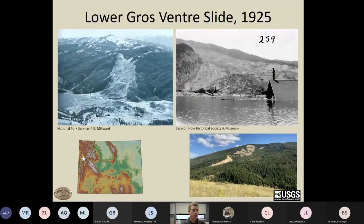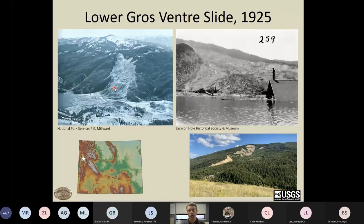I'd be remiss not to mention the Lower Grovant Slide — probably the most famous landslide in Wyoming's history. This was a translational rock slide that occurred in June 1925 — approaching its centennial — involving 40 million cubic meters of material. It checks all the boxes of preexisting factors that promote slope instability: approximately 650 meters of topographic relief, slope-parallel bedding forming dip slopes, a competent permeable Tensleep Sandstone directly overlying the impermeable shale-rich Amsden Formation, undercutting of the toe by the Grovant River, and the site of prehistoric landslide complexes that locals and early geologists recognized prior to 1925.